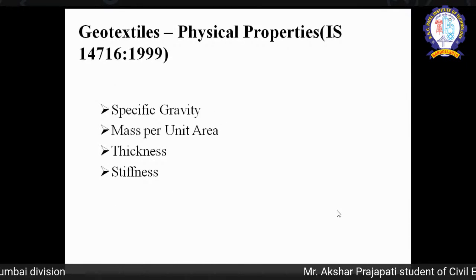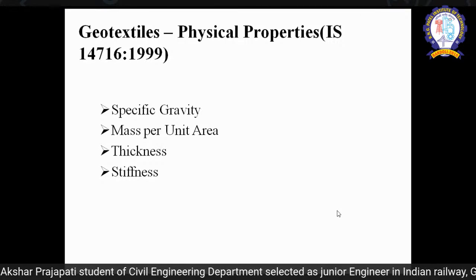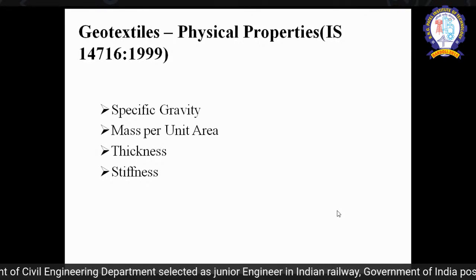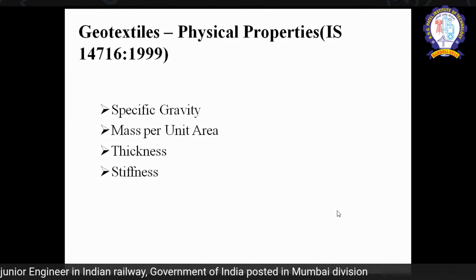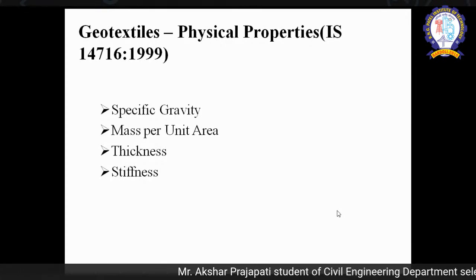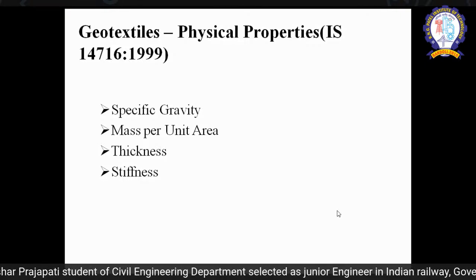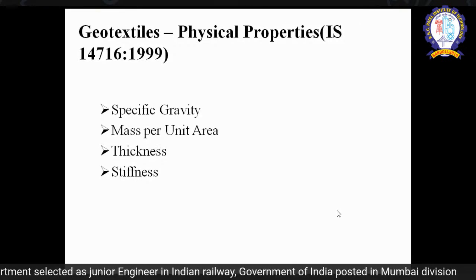Physical properties include specific gravity, mass per unit area, thickness, and stiffness. If you want to refer to standards, you can go to the BIS website and find many IS codes regarding geosynthetics, or you can use ASTM codes — the American Society for Testing Materials website — to refer to various geosynthetic standards.